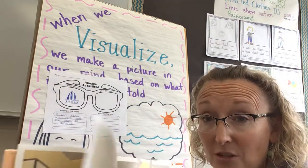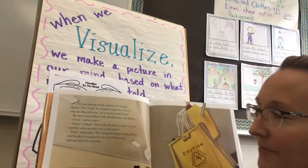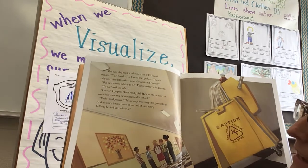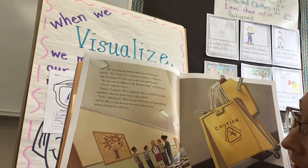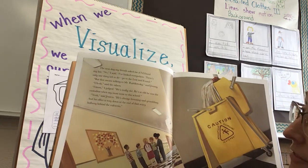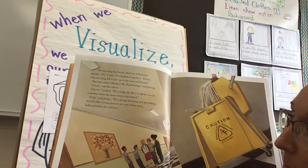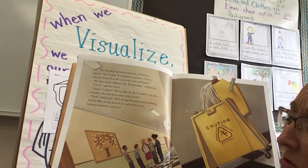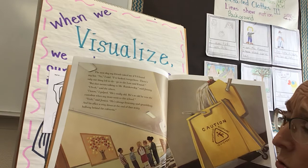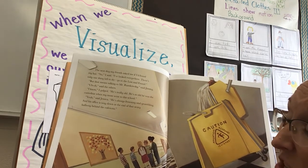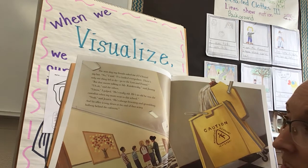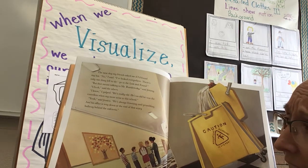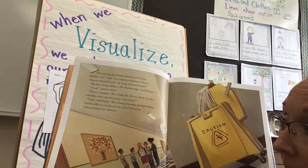I had other spots where I had visualization but I'm saving a spot. The next day my friends asked me if I'd found my hat. 'No. I've looked everywhere. There's only one thing left to do — go to the lost and found.' 'But that means talking to Mr. Rumkowski.' I gulped. He's really old — so old he was the custodian when my mom went to this school. He's always frowning and grumbling, and his office is way down at the end of that scary hallway behind the cafeteria.